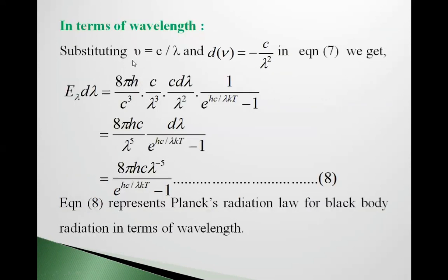Now in terms of wavelength, substituting nu equals c upon lambda and differentiating, d nu equals minus c upon lambda squared. Put these values in equation 7. We get E lambda d lambda equals 8 pi h upon c cubed times c upon lambda cubed times c d lambda upon lambda squared times 1 upon e raised to hc upon lambda kt minus 1. Simplifying, we get 8 pi hc upon lambda to the fifth into d lambda upon e raised to hc upon lambda kt minus 1, equation 8. This equation 8 represents Planck's radiation law for black body radiation in terms of wavelength.